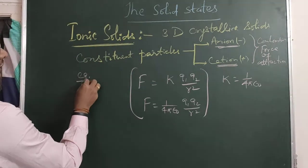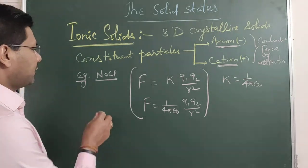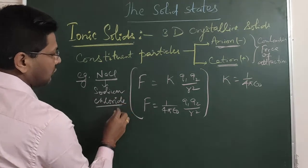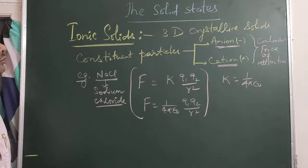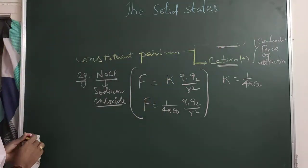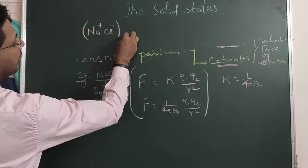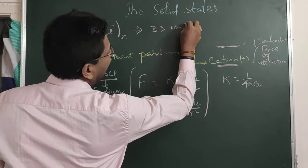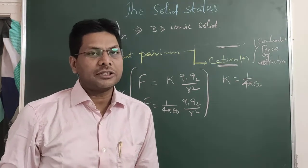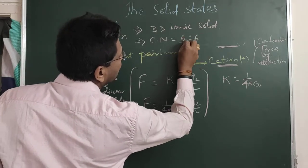Let's see a few examples. The first example is NaCl — sodium chloride, also the common table salt. The correct formula of sodium chloride is Na⁺Cl⁻. It is a three-dimensional ionic solid. One sodium ion is surrounded by 6 chloride ions, and one chloride ion is surrounded by 6 sodium ions. So the coordination number of sodium chloride is 6:6.